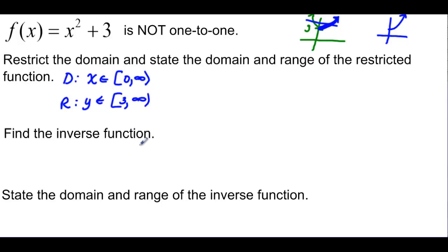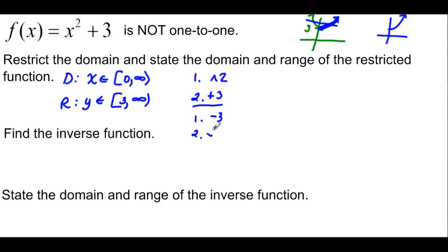Now it says find the inverse function. The first step: you start with x, and the first thing we did to it was that we squared it (^2), and the second thing we did was we added 3. For the inverse, the first thing I'm going to do is subtract 3, and then square root. So my f inverse of x is going to start with x, subtract 3, and then all of that is going to get the square root.